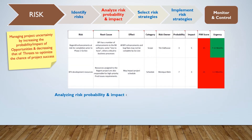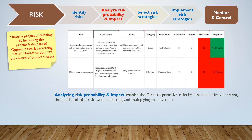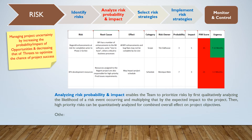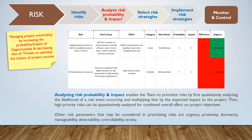Analyzing risk probability and impact enables the team to prioritize risks by first qualitatively analyzing the likelihood of a risk event occurring and multiplying that by the expected impact on the project. High priority risks can then be quantitatively analyzed for their combined overall effect on project objectives. Other risk parameters that may be considered in prioritizing risks are urgency, proximity, dormancy, manageability, detectability, controllability, strategic impact, and propinquity.